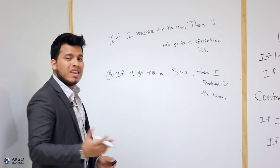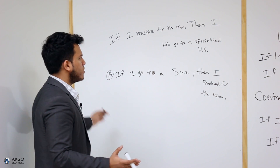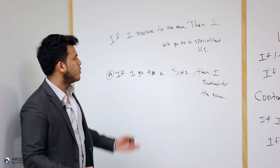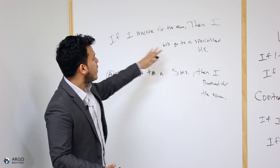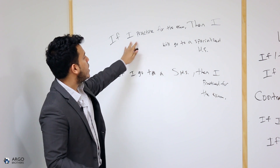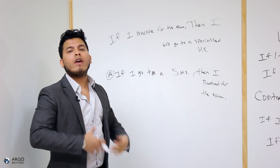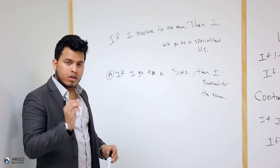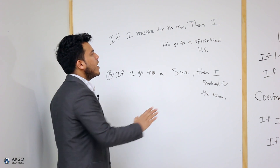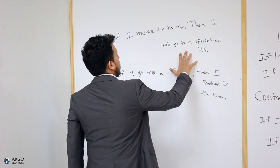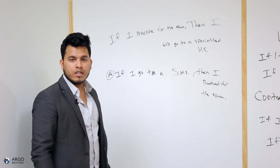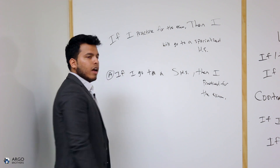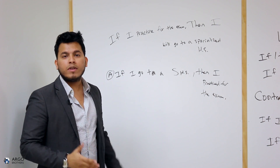We must negate and switch. It's very simple — once you do a few of these, you can do it mentally. So switching and negating: if I go to a specialized high school, then I practiced for the exam becomes: if I did not go to a specialized high school, then I did not practice for the exam. That is going to be the answer.